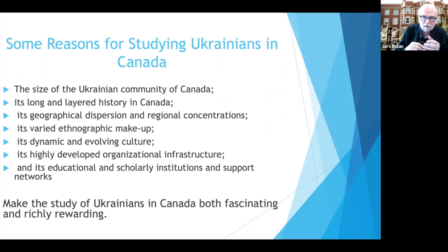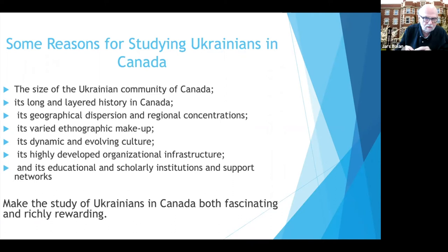There are now 1.3 million Canadians as of the last census who claimed some sort of Ukrainian ancestry — many of them partial Ukrainian through intermarriage, but they still identify with their Ukrainian heritage. What's also interesting is that Ukraine has provided many more immigrants besides ethnic Ukrainians: many Jews, Poles, Mennonites, German Lutherans, Moravians, Romanians, who also came from villages and towns inside Ukraine. Many of these people are now starting to identify their roots as Ukrainian, whereas earlier they said they came from Russia, Poland, or Austro-Hungary. This is adding to the mix of Ukrainian-Canadian studies.